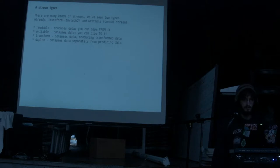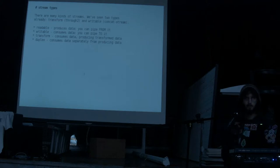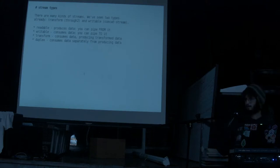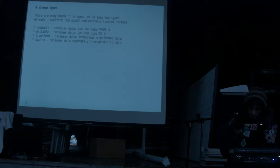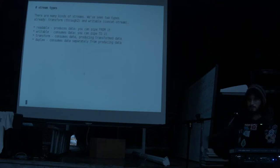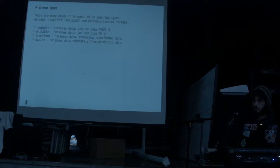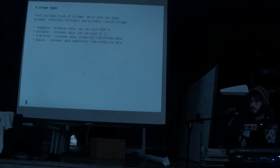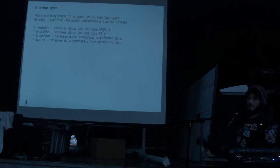We've seen a few types of streams already. Readable streams — like process.stdin — you can call dot pipe on them, but you can't pipe something into stdin. There's also a writable stream, like concat-stream, process.stdout, or process.stderr — these are things you can write to but you can't take their data and put it somewhere else. They're sort of like a sink — it's like a data graveyard where you can only put stuff in.